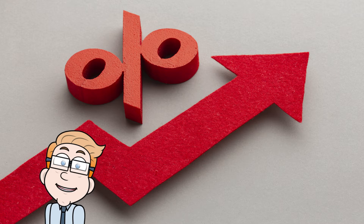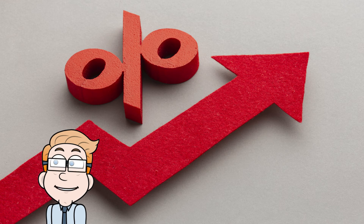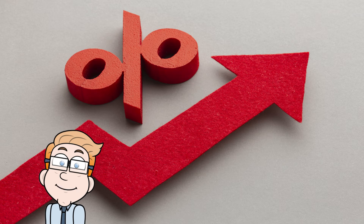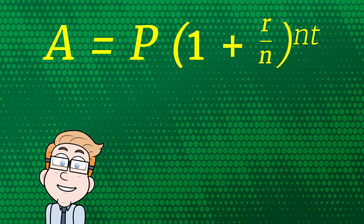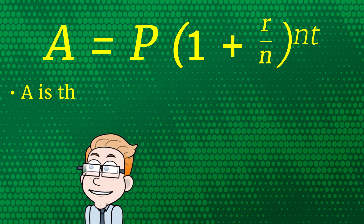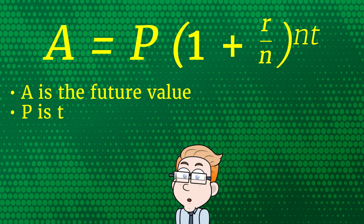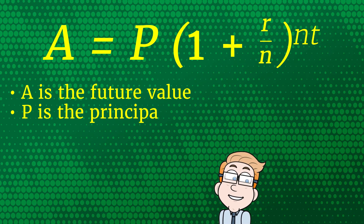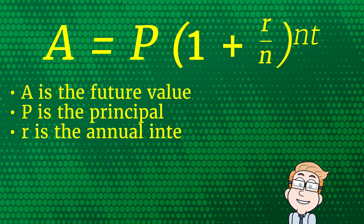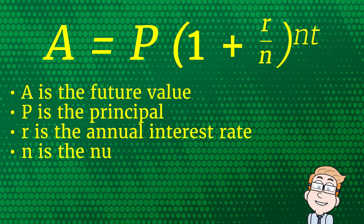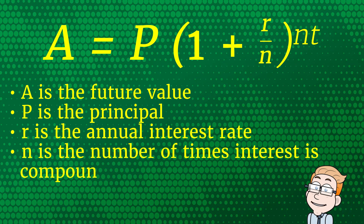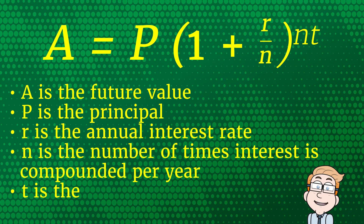This is why understanding compound interest is so crucial for long-term financial planning. We can also express this with a formula. In the formula: A is the future value of your investment, P is your principal amount (the initial sum you're starting with), r is your annual interest rate, n is how often your interest is compounded each year, and t is the time in years.